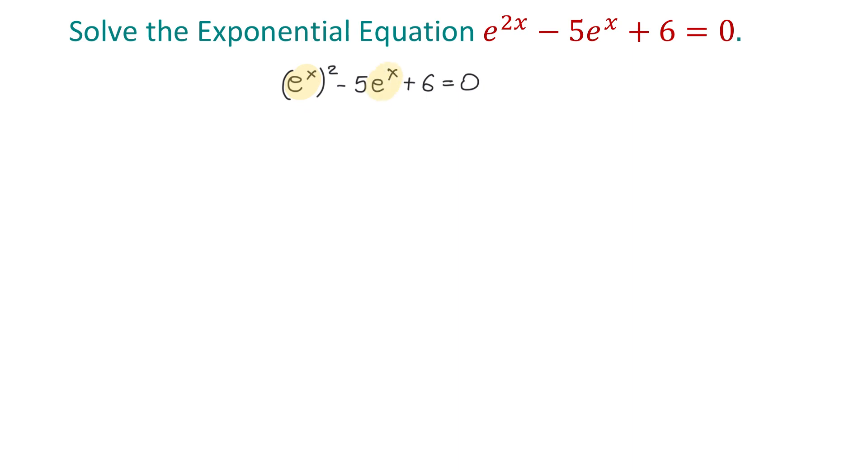The first two terms have e to the x power and I will replace each one of them with another variable u. Then I will have u to the second power minus 5 times u plus 6 equals 0.